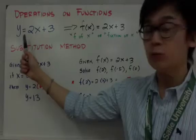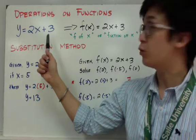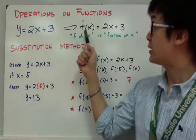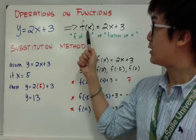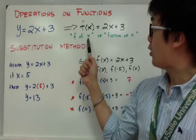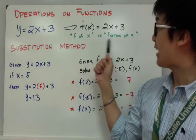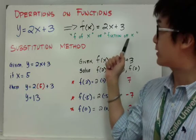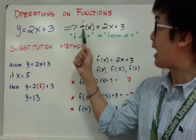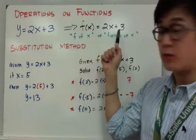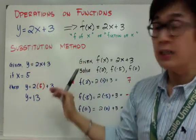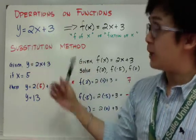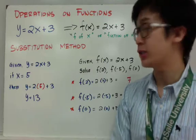This time, instead of using y equals an expression, we're working on a new notation which is f of x. This type of notation is read as 'f of x' or 'function of x.' So now we have f of x is equal to 2x plus 3. We're going to set this aside for this particular lesson, but the concept is pretty much the same.